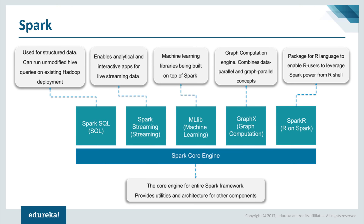Spark Streaming is the component of Spark used to process real-time streaming data. It enables high-throughput and fault-tolerant stream processing of live data streams. Spark SQL is a new module in Spark which integrates relational processing with Spark's functional programming API. It supports querying data via SQL or the Hive query language. For those familiar with RDBMS, Spark SQL will be an easy transition that extends traditional relational data processing.